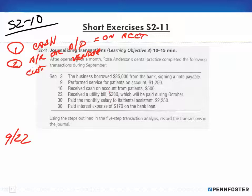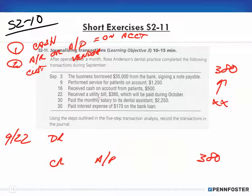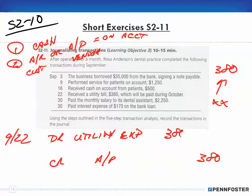September 22: received the utility bill for $380, which will be paid in October. Am I affecting cash? No, because I'm not paying it until October. Am I affecting receivables or payables? Since I received the bill, I'm going to owe it — that's accounts payable. Accounts payable is a liability, so I increase it on the credit side: credit accounts payable $380. Then I debit utility expense for $380, since that's the normal operating expense I'm incurring.